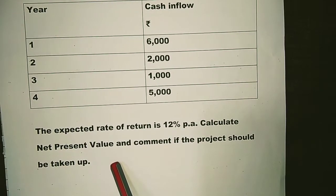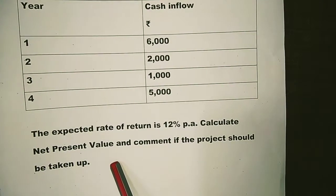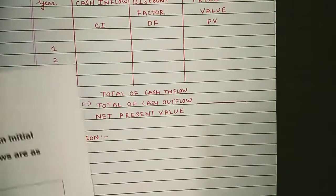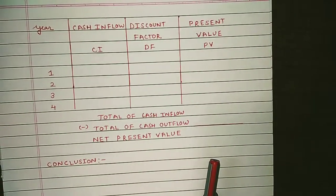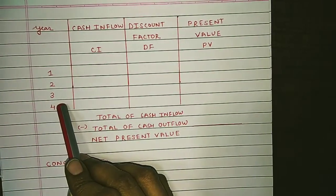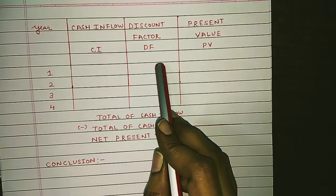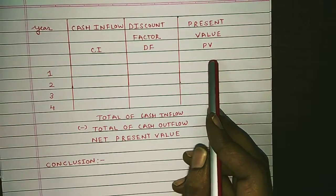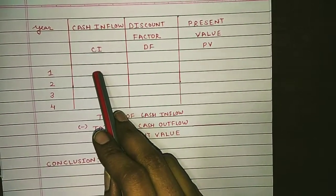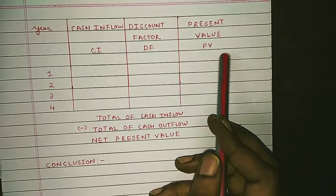We have to recommend whether the organization should accept or reject this project. To solve this, we prepare a table of four columns: the first column is Year, the next is Cash Inflow, the third is Discount Factor, and the last is Present Value. Students can write the short forms in an examination: CI, DF, and PV.